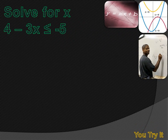You try this one — hit your pause button, try the problem, and then hit the forward key to move on to my solution. This is another two-step solution. I'm trying to isolate x, so I need to get rid of the positive 4 and the minus 3 being multiplied times x. Let's get rid of that 4 first by subtracting 4 from both sides of the inequality.